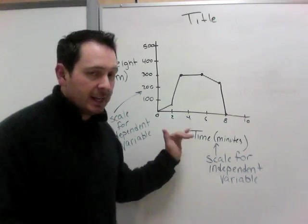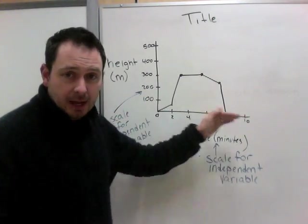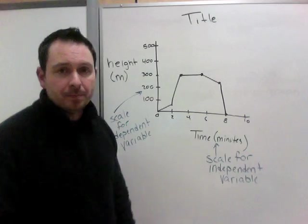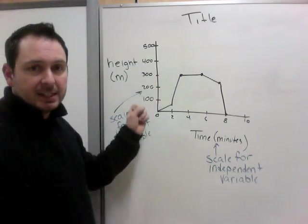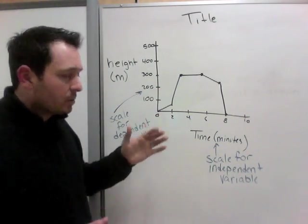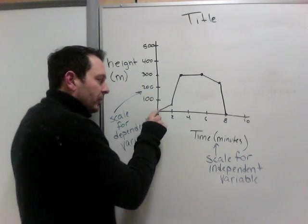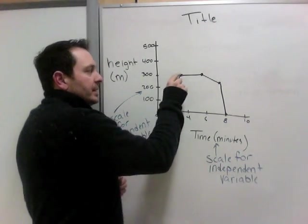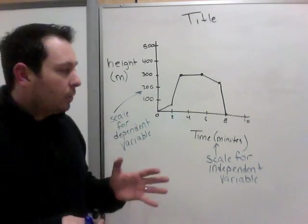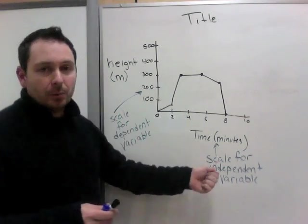However, so in this case, and almost all cases, time is our independent variable. And our dependent variable in this case is height. How high you are. So let's say this was a little remote control helicopter. You fly your helicopter up, and then it goes higher, and then it stays the same height. So the height is depending on what time it is.